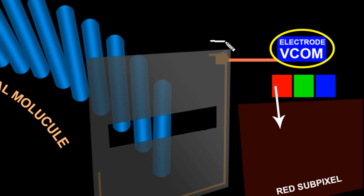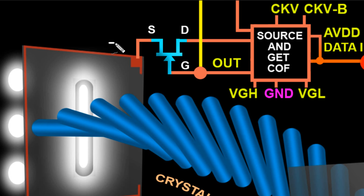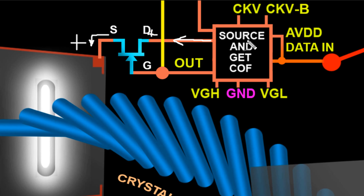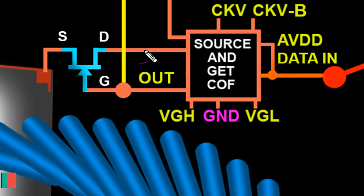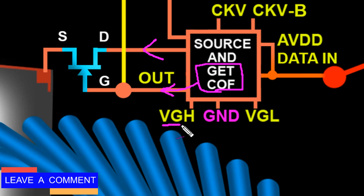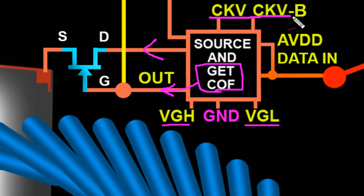VCOM supplies negative voltage to the negative electrode of the liquid crystal cell. The positive voltage for the positive electrode is output from the source of the transistor. To output a positive voltage from the source, a positive voltage is input to the drain from AVDD. So: AVDD is input to the source IC here and output from here. At the gate IC, AVDD is output via VGI and VGL biasing and by CKV (the vertical clock pulse).